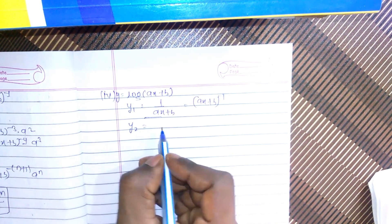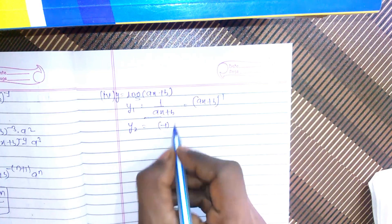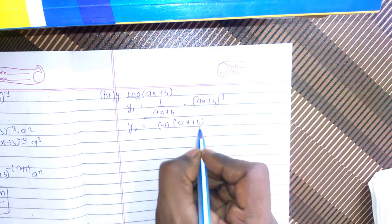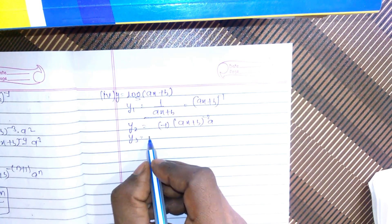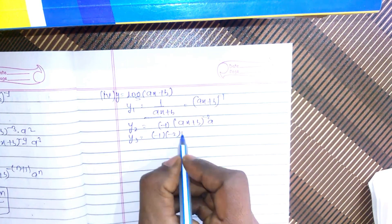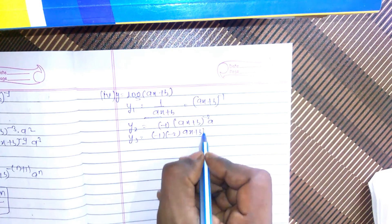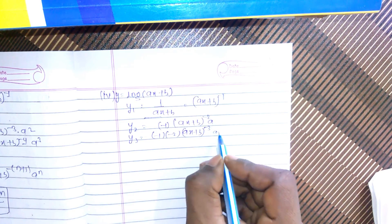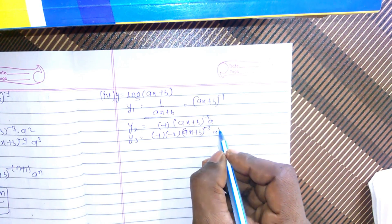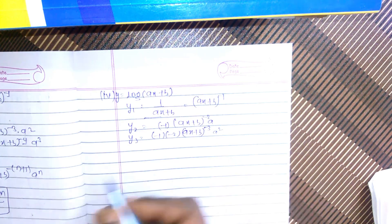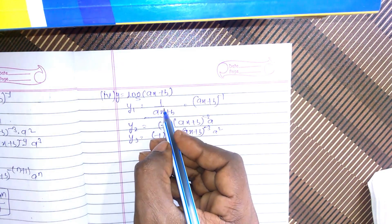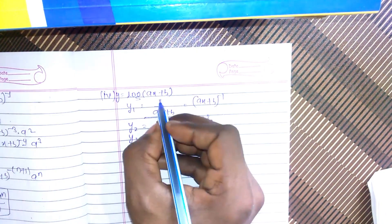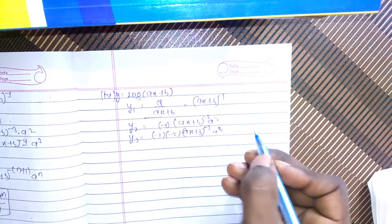Then y2 equals −1·a·(ax+b)^(−2)·a, giving −a²·(ax+b)^(−2). And y3 equals (−1)(−2)·a³·(ax+b)^(−3). Here we note the factors of a: a, a², a³ are present at each step.